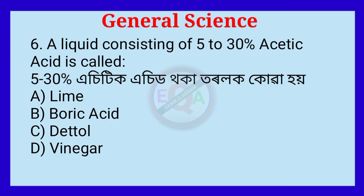Question number 6. A liquid consisting of 5–30% acetic acid is called — correct answer: vinegar.